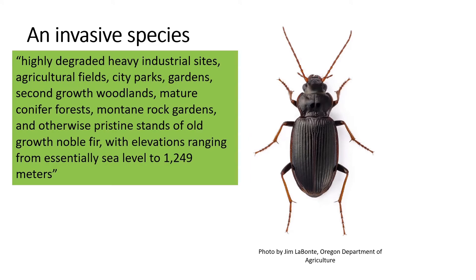Here is a quote from a paper on this species describing the range of habitats it occupies — it's very wide: highly degraded heavy industrial sites, agricultural fields, city parks, gardens, second-growth woodlands, mature conifer forests, montane rock gardens, and otherwise pristine stands of old-growth noble fir, at elevations from sea level to 1,249 meters. In other words, this beetle has a lot of potential to spread into many different habitats in the Vancouver area if it gets well established. The key question is what the real ecological threat is — it won't become a pest of agriculture since it doesn't feed on plants, but it might cause ecological effects like displacement of native species.